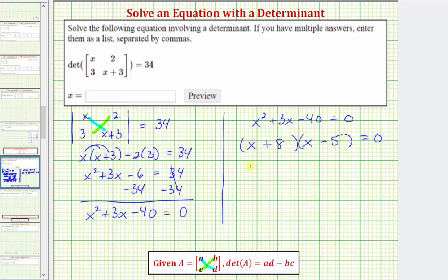So we have two solutions: x plus 8 equals zero, or x minus 5 equals zero. This gives us x equals negative 8, and x equals positive 5. Our two solutions are negative 8 and positive 5.